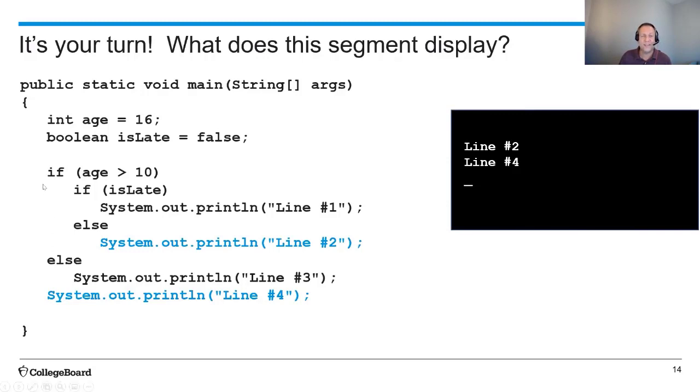So the first if statement asks if age is greater than 10. It is. So it's going to go inside to the second if statement. If isLate. Well, isLate is false. It's not true. So it's not going to print out line number one, but it is going to go to the else that belongs with the closest if and print out line number two. Then it's going to skip over this else because this else belongs to the first if, and we already evaluated that to be true. And it's going to skip over the print line for line number three, and it's going to print out line number four. And that's it. And that's how our nested if statements work.